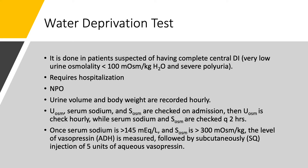During the test, we measure and record urine volume and body weight hourly. On admission, we check urine osmolality, serum sodium, and serum osmolality. Then we check urine osmolality every hour and serum sodium and serum osmolality every two hours. As you can imagine, if you're practicing on a medical floor, managing the collection and lab samples is quite challenging.